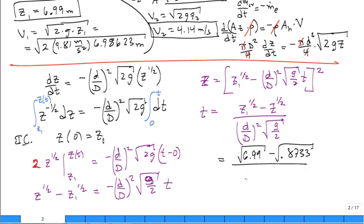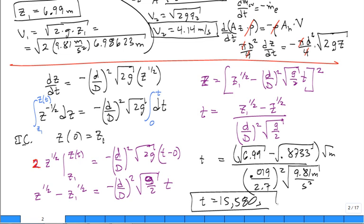At this point we can substitute our numbers. z1 was initially 6.99, square root of that, subtract the final height z2, 0.8733, square root of that, divided by the diameter of the hole 0.019 meter, divided by the diameter of the tank 2.7, both diameters are squared, square root of 9.81 meters per second squared. You'll find that they come out to be 15,580 seconds. That's a long time.